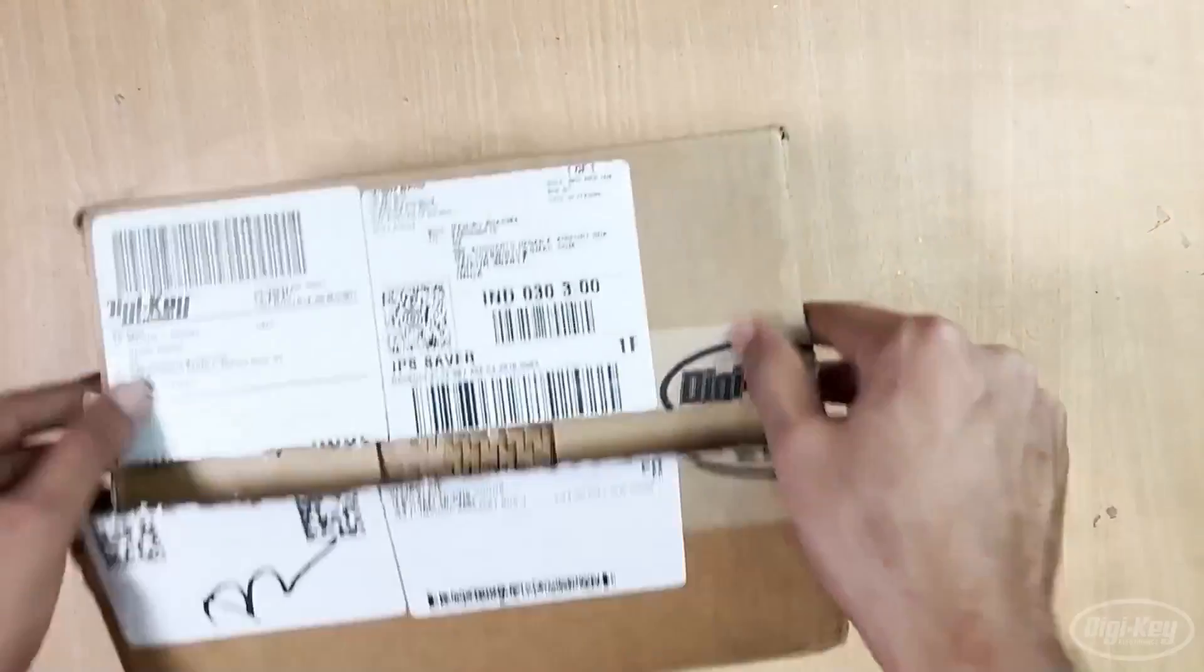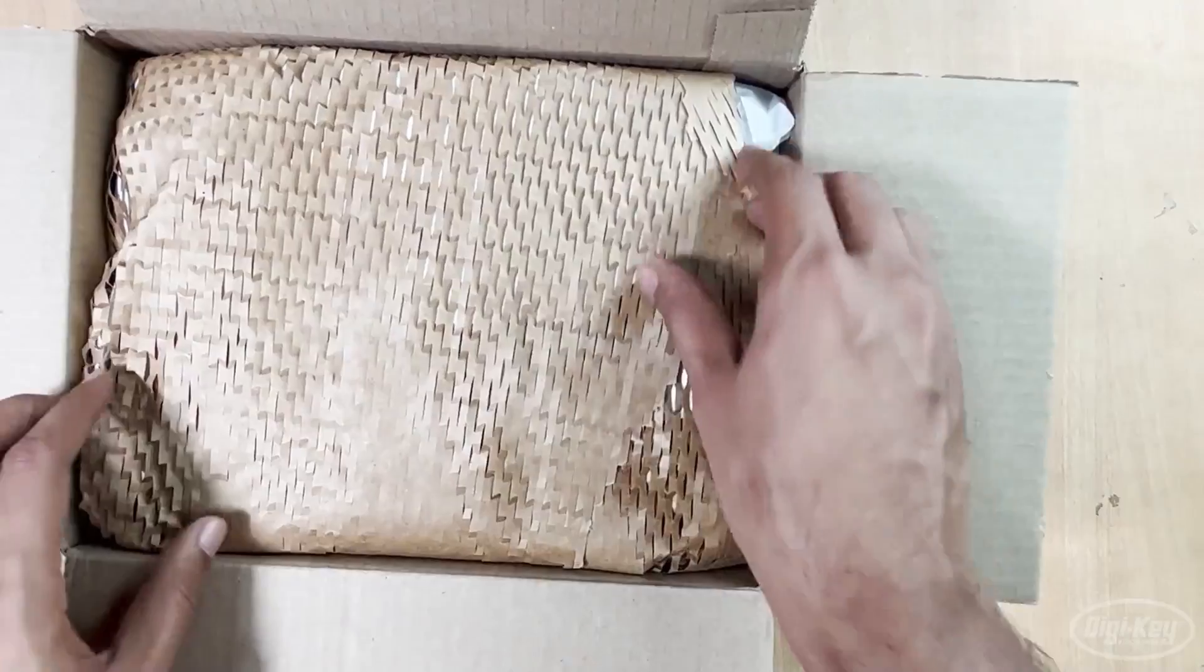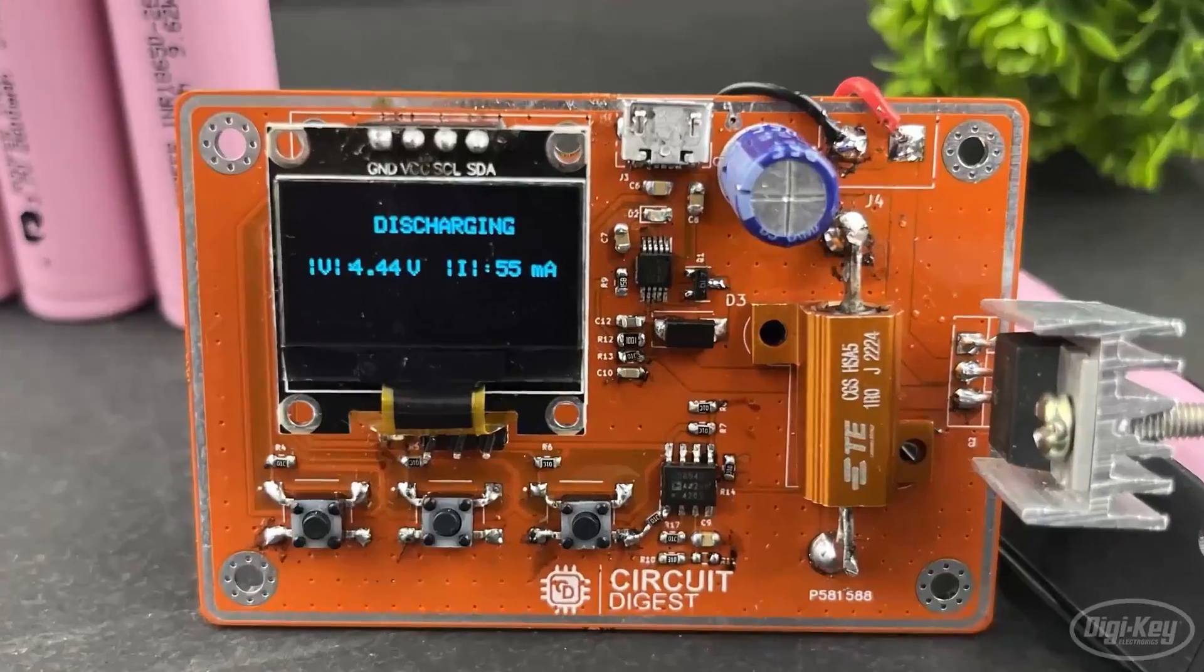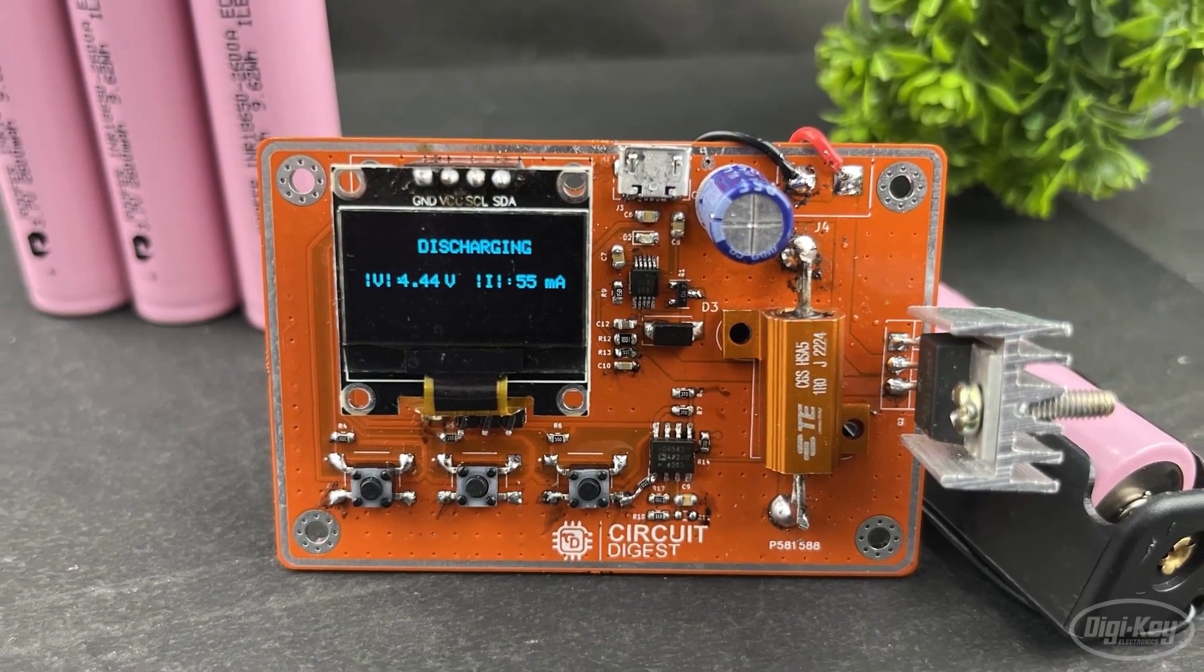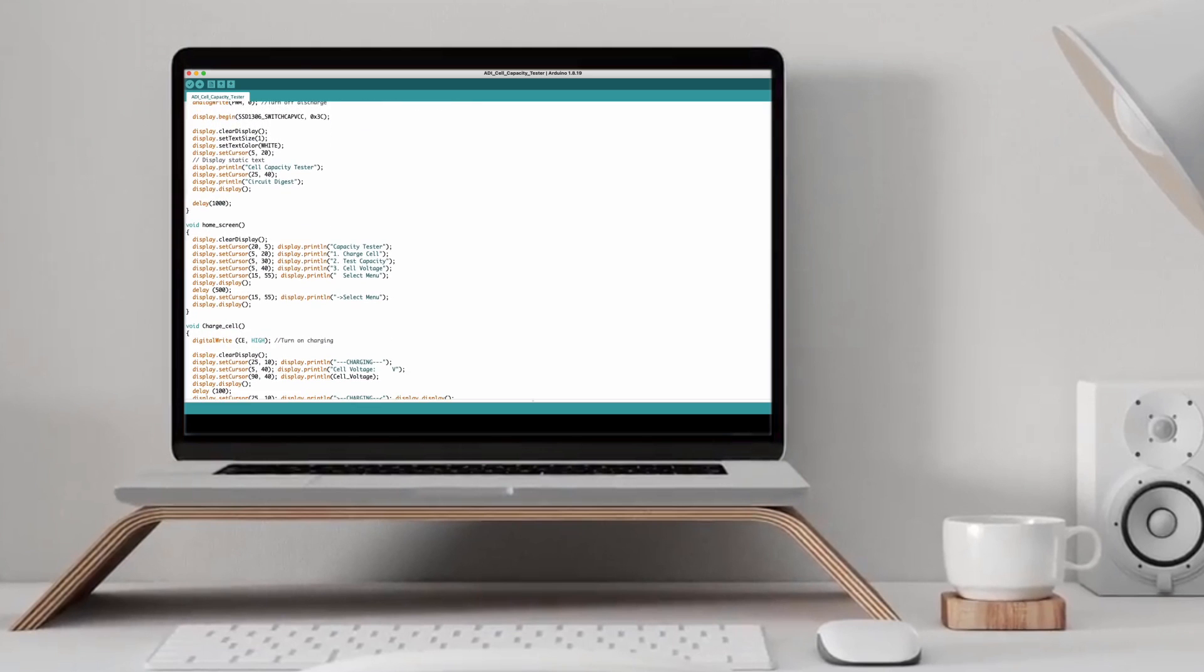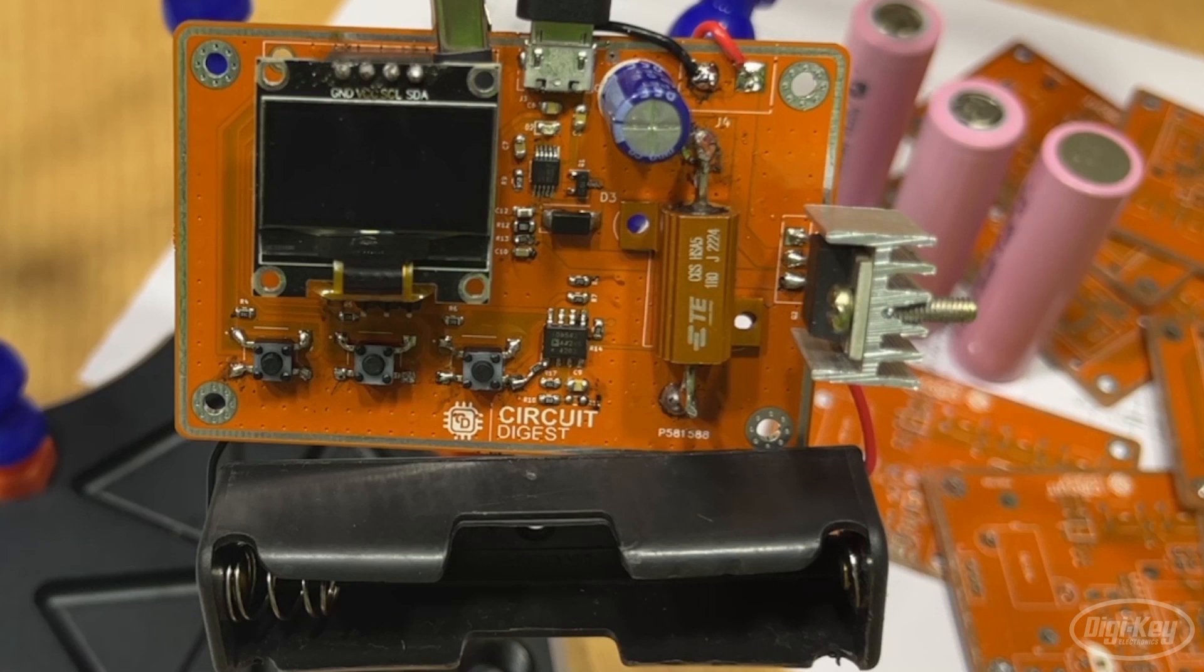By the time our PCB boards arrived we also received all the required components for our project from Digi-Key. Like always the packaging was professional and all items were neatly labeled. We just began assembling our board. Within few minutes we assembled all the components and our board was ready for programming. We are not going to get into the depths of the programming for the matter of this video. Just upload the code into your ATmega IC here and you're good to go.